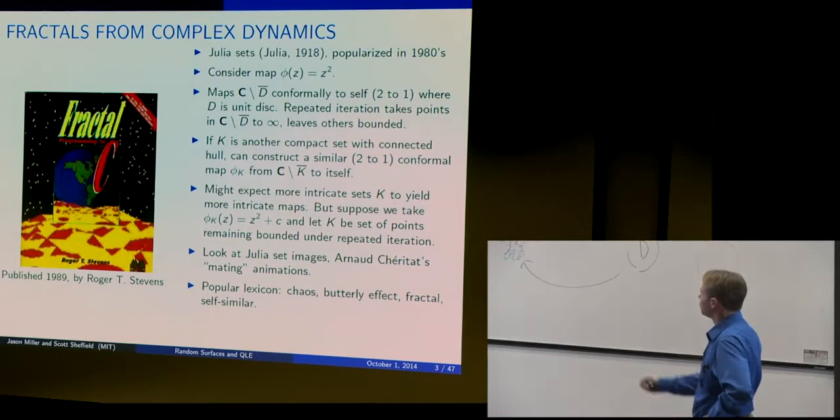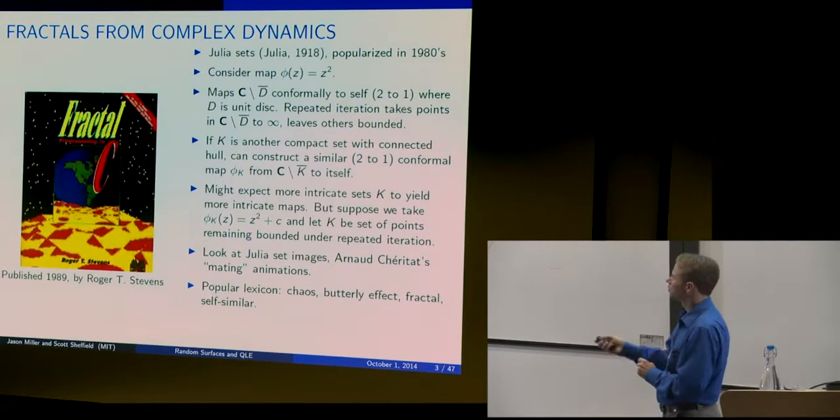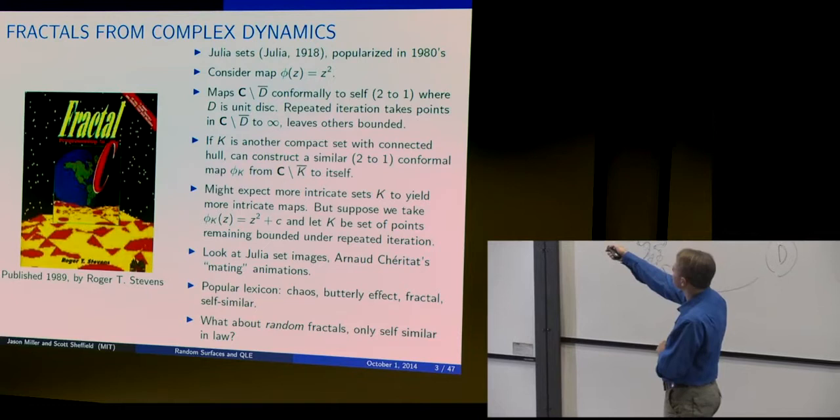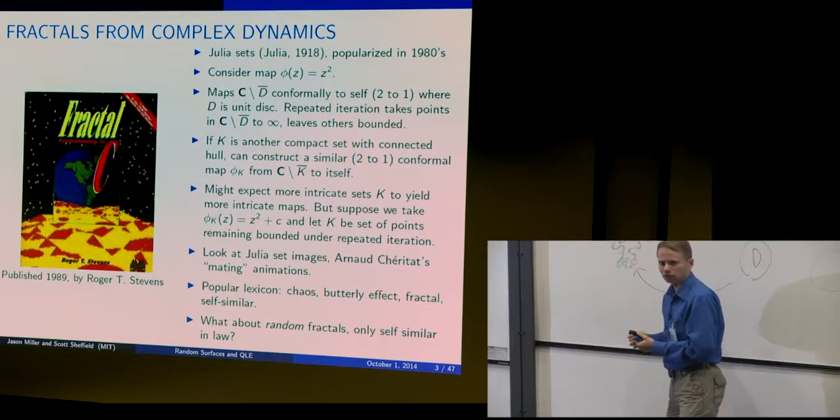Thanks to Julia sets, we got words like chaos, butterfly effect, fractal, and self-similar into the popular lexicon — the sort of things you'd read in Time and Newsweek. But now I want to think about applying these ideas to random fractals. These will be fractals where we don't have this exact algebraic self-similarity, but where there's still some self-similarity in the law of the fractals.